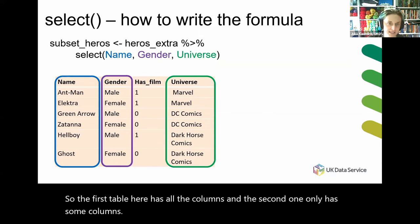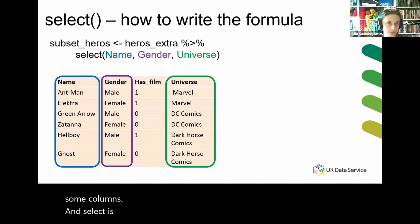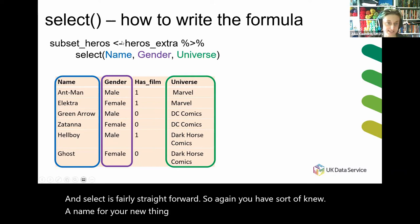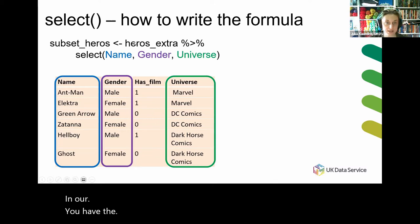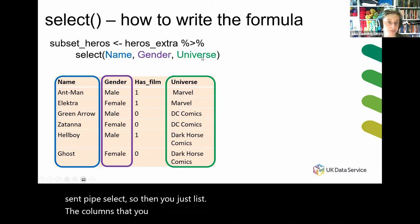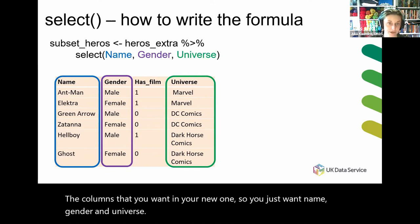Select is fairly straightforward. You have a new name for your new thing, and you're doing assignment in R. You have the dataset you're working with — your original, all-columns set — then pipe to select. You just list the columns that you want in your new one. So if you just want name, gender, and universe, that's pretty straightforward.